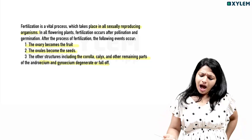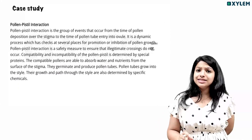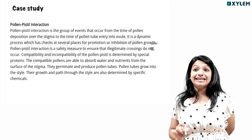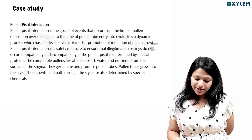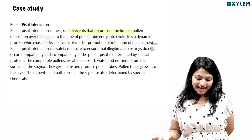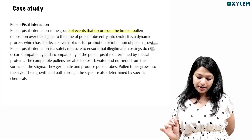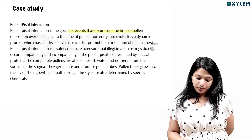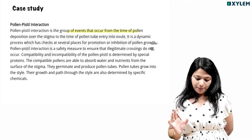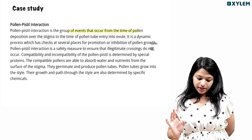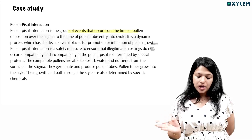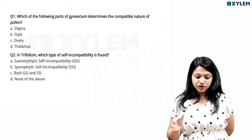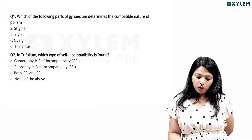Case study based question on pollen-stigma interaction: it is a group of events occurring from the time of pollen deposition on the stigma to pollen tube entry into the ovule. Compatibility and incompatibility of pollen is determined by special proteins. Compatible pollens are able to absorb water and nutrients from the surface of the stigma; pollen tubes grow into the style, and their growth and path are determined by specific chemicals.